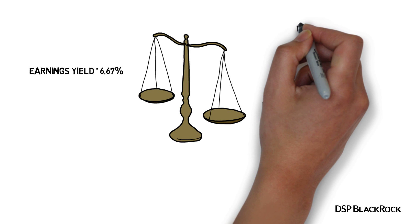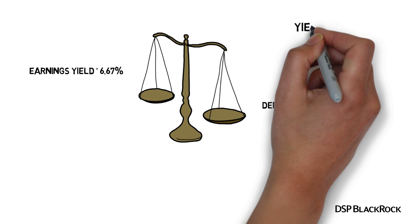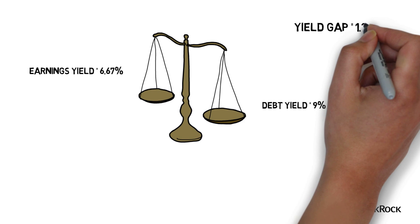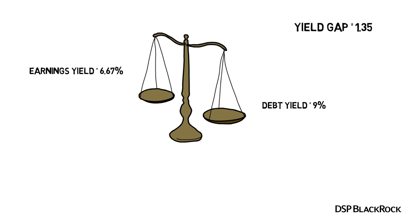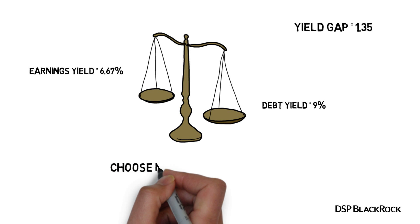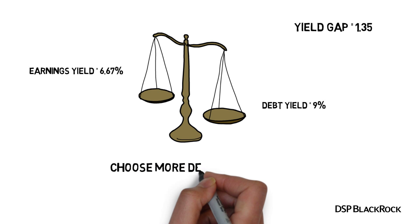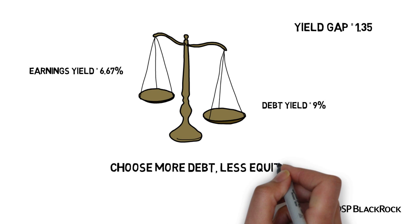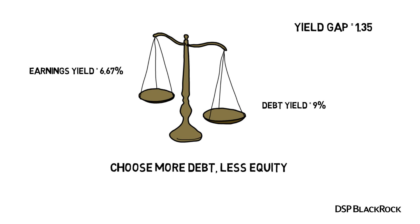We can make a ratio of these two numbers — the debt yield divided by the earnings yield — which is called the yield gap. In our example, the yield gap is 9 divided by 6.67, which equals 1.35. Debt is doing better than equity, so more money should be in debt and less in equity.